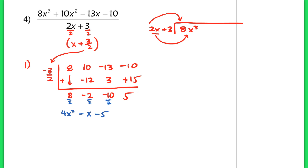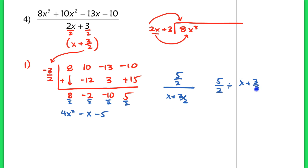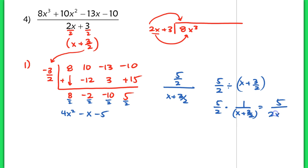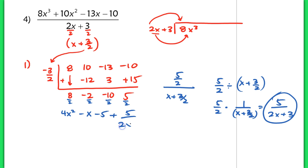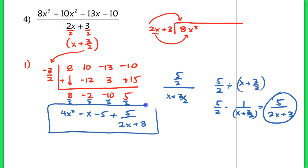Let me show you what would happen if I did divide that remainder by 2: I'd have 5 halves over x plus 3 halves. If I simplify that fraction — 5 halves divided by x plus 3 halves is like multiplying 5 halves by 1 over x plus 3 halves. Multiplying denominators and numerators gives 5 on top and 2x plus 3 in the denominator. So writing it as 5 halves over x plus 3 halves, I end up with a remainder of 5 over 2x plus 3. You don't actually need to divide out the end remainder to get your final expression.